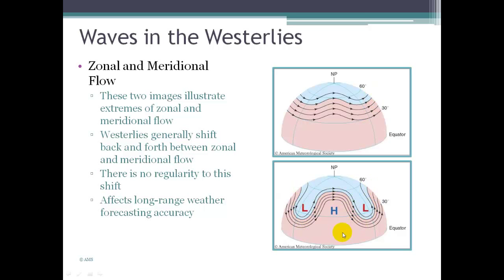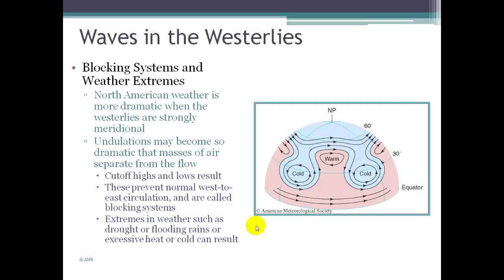These troughs and ridges cause a lot of weather to happen for us in North America and make long-range forecasting very challenging. Sometimes we get what are called blocking systems. This happens when we get strong meridional flow in the jet stream area in the westerlies, so strong that a little pocket of cold air breaks away from the main polar flow. Warm air then gets stuck in a circulation pattern in between, creating subsystems that block the usual flow of air.